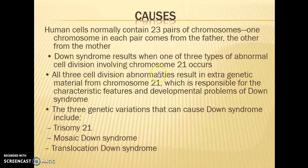This results in extra genetic material from chromosome 21. Instead of the normal two copies, there will be three, which is responsible for the characteristic features and developmental problems of Down syndrome. This extra genetic material in the 21st chromosome leads to all the characteristic clinical features and developmental problems faced by children with Down syndrome.